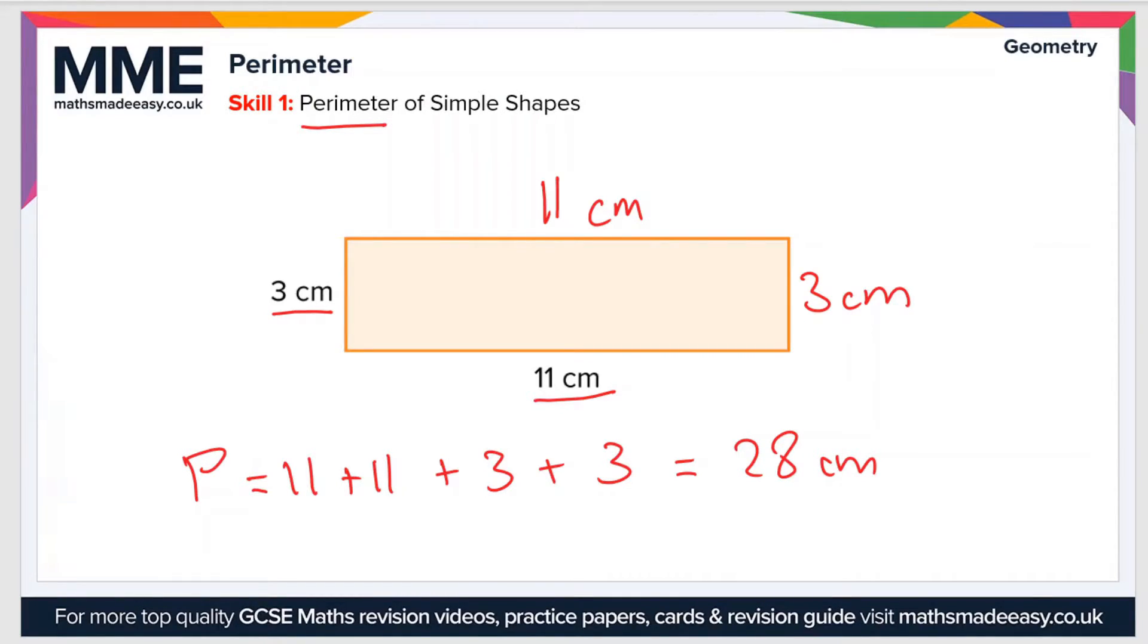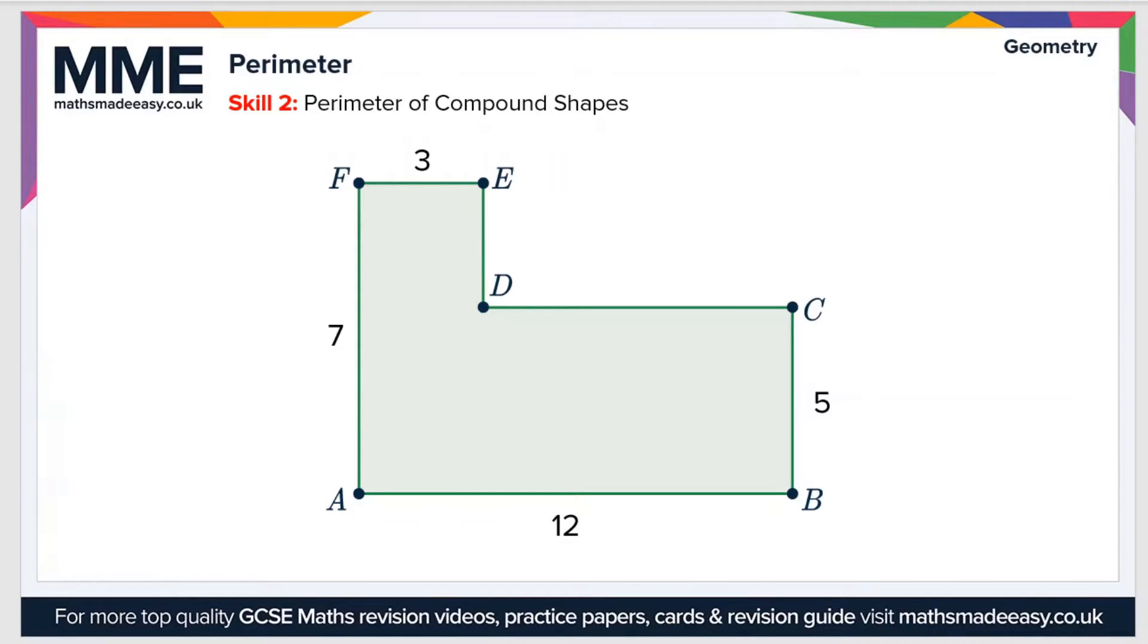So that's how to calculate the perimeter of a simple 2D shape. Let's move on now. Skill number two is calculating the perimeter of compound shapes. A compound shape is just a shape made up of more than one other shape.